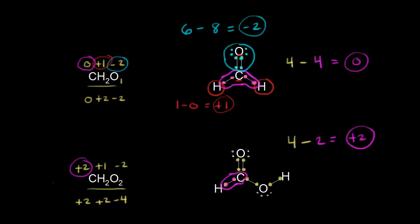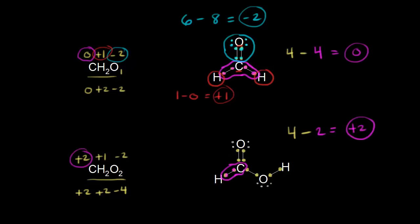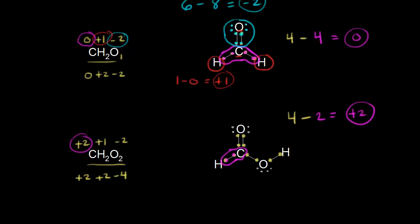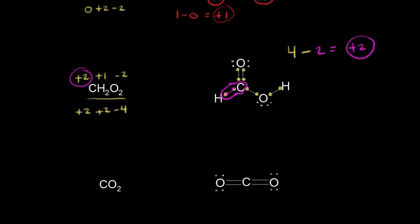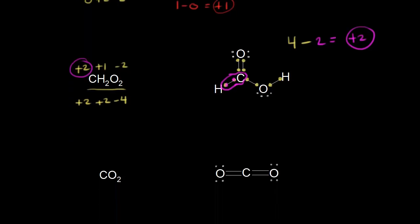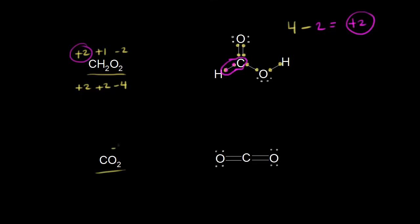Every molecule we've done so far has had a different oxidation state for carbon. Carbon is unique — it has all these different oxidation states. Let's finally look at carbon dioxide, CO₂. Oxygen should have an oxidation state of minus two, and we have two of them for a total of minus four, so carbon must have an oxidation state of plus four.